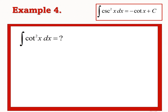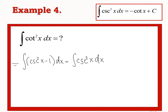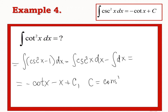According to the Pythagorean identity, we can write cot²x as (csc²x minus 1) dx. Using the property of integrals, we split it as ∫csc²x dx minus ∫dx. The integral of csc²x dx equals negative cotx, giving the result: negative cotx minus x plus C, where C is an arbitrary constant. This is the correct answer for example 4.